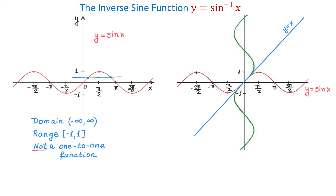To better understand this, let's take a look at the figure to the right. Here we have the graph of the sine function, and if this function would have an inverse function, then the graph of the inverse function would be a reflection of the graph about the line y equals x. So if we take this graph and reflect it about y equals x, we get this graph.